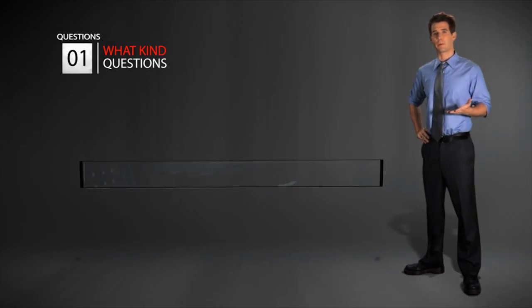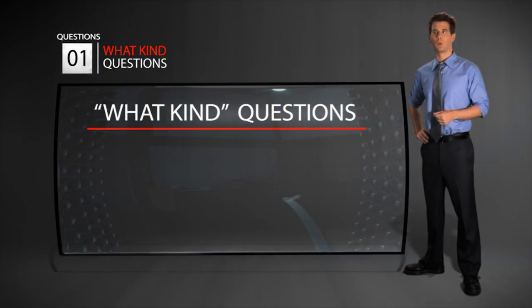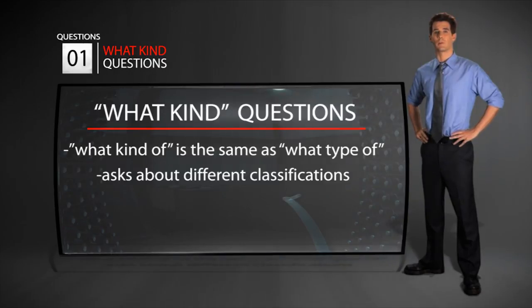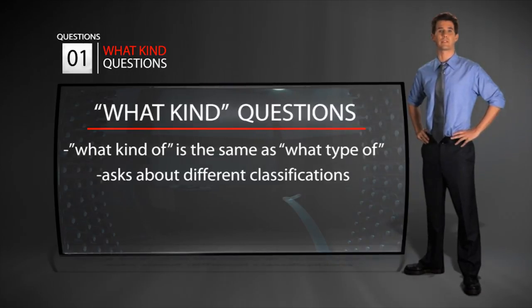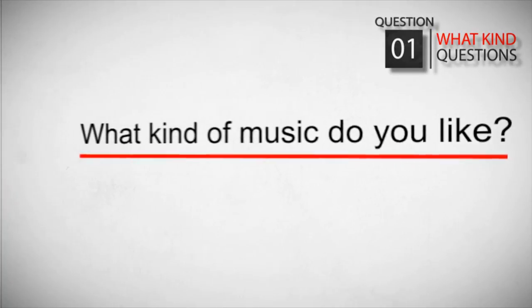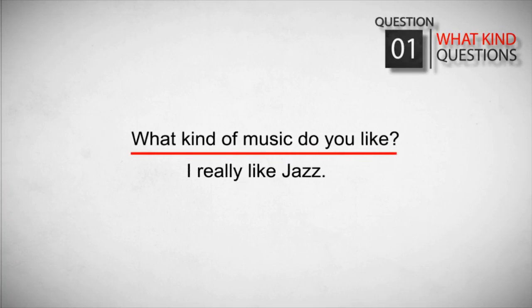Sometimes the word "what" can be used with other words to make a new meaning. For example, "what kind of" — "what kind of" or "what type of" can be used to talk about different classifications. For example: "What kind of music do you like?" — "I really like jazz."